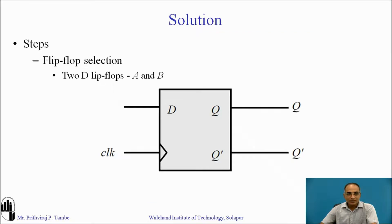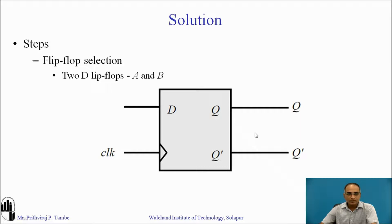The next step is flip-flop selection. The problem statement itself provides the flip-flop information: you require two D flip-flops, which we will name A and B. We all know the characteristic of a D flip-flop: Q+ is always equal to D. Using D flip-flops makes the design procedure very straightforward.